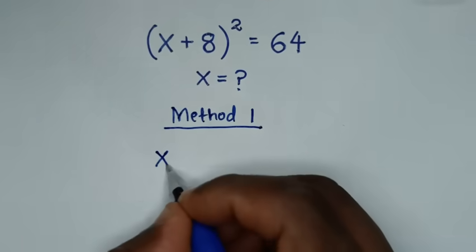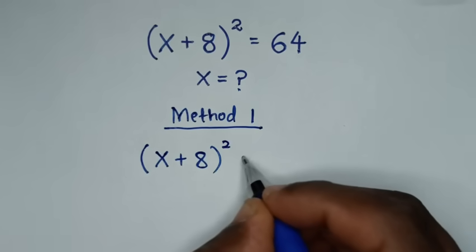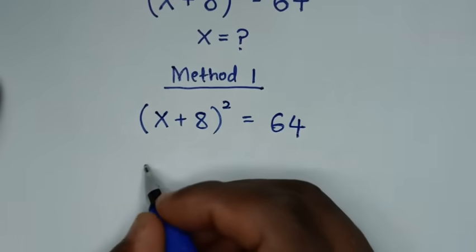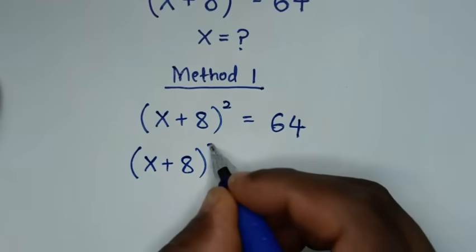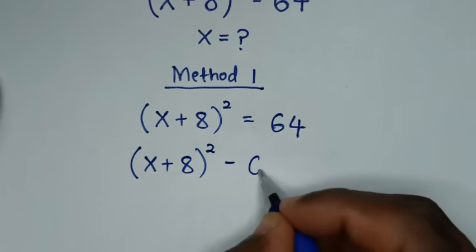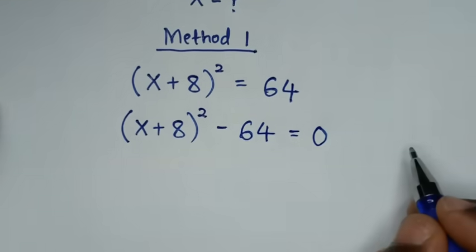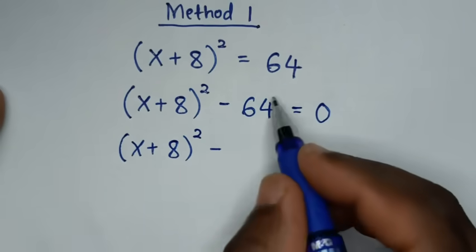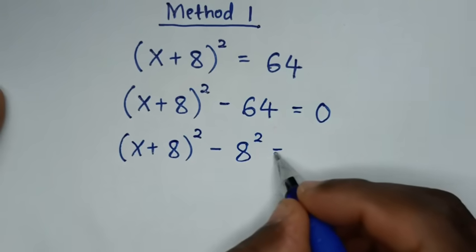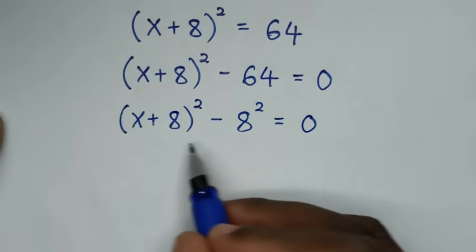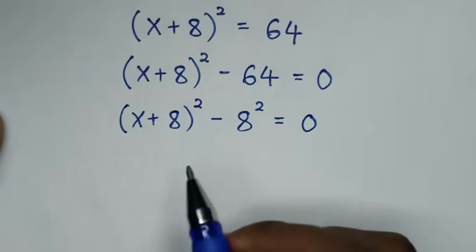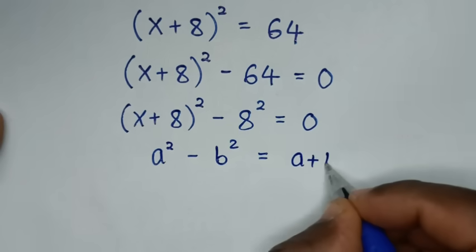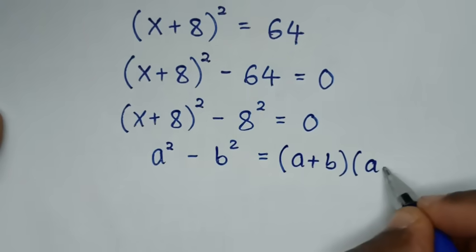From our problem, (x + 8)² = 64. In the first step we'll take this 64 to the left side, so it will be (x + 8)² − 64 = 0. Then (x + 8)² − 64, and 64 is the same as 8², equals 0. Now this is in the form of difference of two squares, so we apply the difference of two squares rule: a² − b² = (a + b)(a − b).